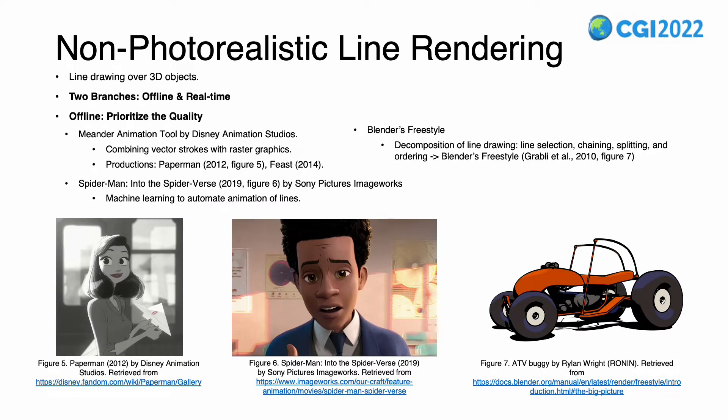One artistic medium that has been constantly explored in computer graphics is line art. NPR line rendering is mainly concerned with creating contour line drawings automatically above 3D objects. There are generally two branches for this kind of stylization rendering: offline or real-time. Offline prioritizes quality over speed, giving artists more control over the style.